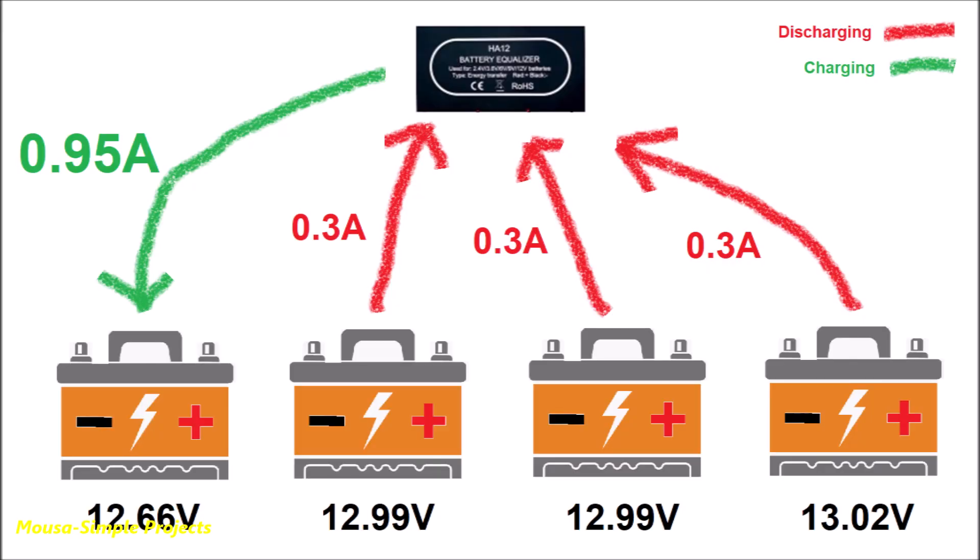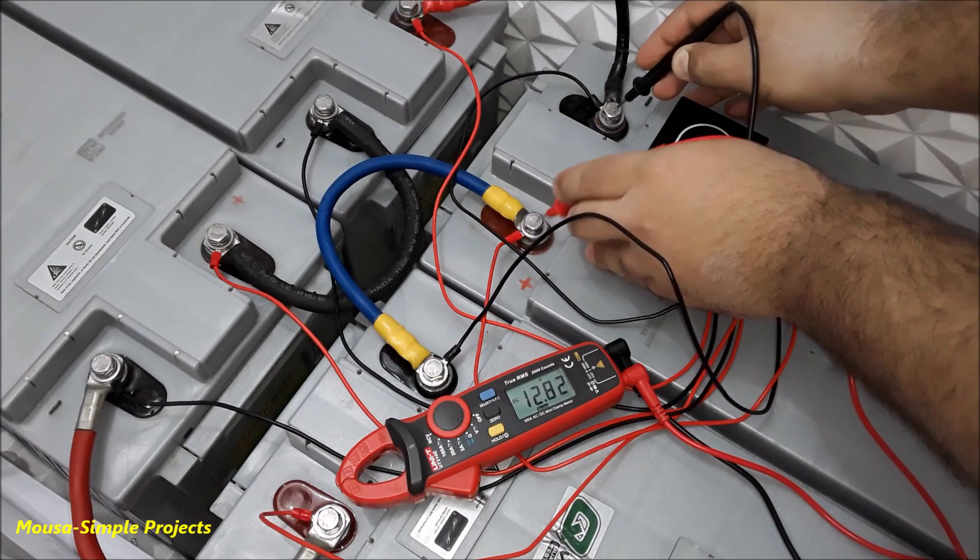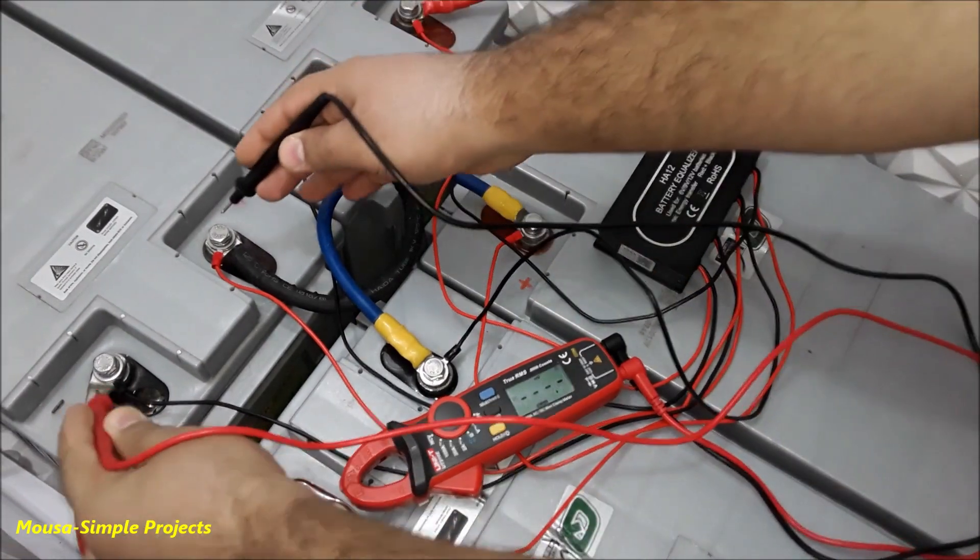So each of them is discharging by a current of around 300 milliamps. After 12 hours, the voltage of these 4 batteries became very close to each other.